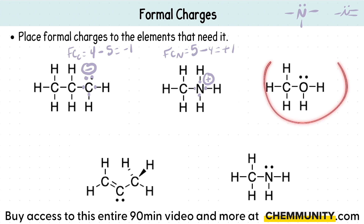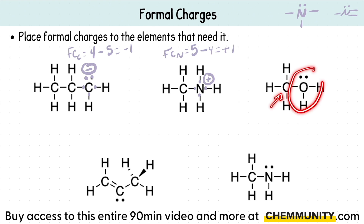This next one — same thing. Carbon is good, it has its typical bonding pattern. However, this oxygen is questionable. Let's double check. Formal charge of oxygen: that is 6 valence electrons minus how many it has — 1, 2, 3, 4, 5 — so this would be a positive 1. I would place a positive by that oxygen.